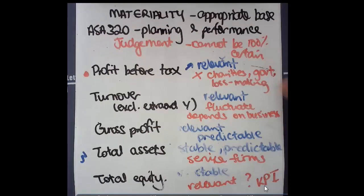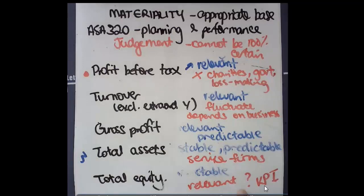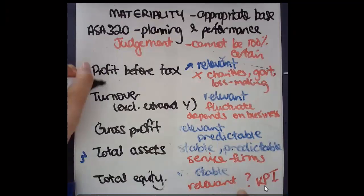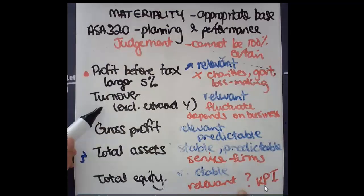As a percentage, we often use a percentage to calculate the materiality. So we take the figure of profit before tax and we multiply it by some percent. Typically, the figure we use for profit before tax is going to be a lot larger as a percentage, perhaps 5%, compared to something like turnover because turnover is a bigger number overall.